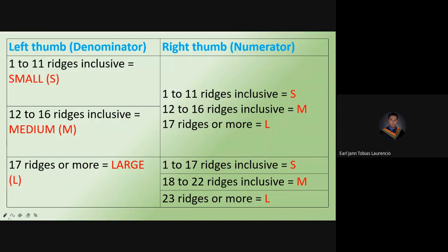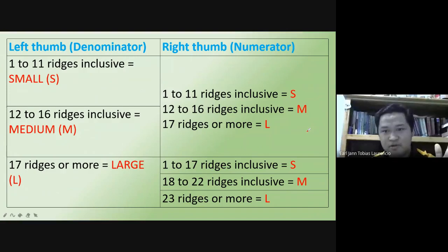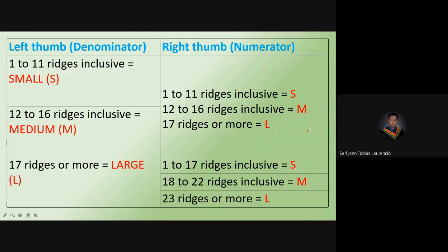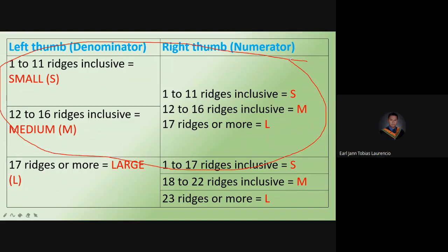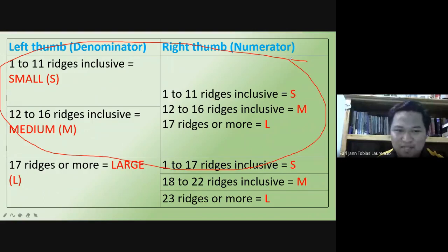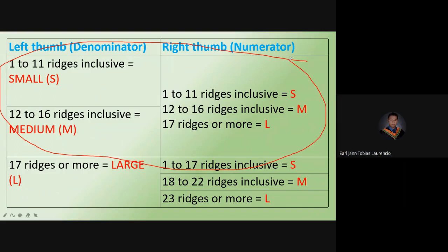When the left thumb is small, use the first category for the right thumb. For example: if the left thumb ridge count is 7, that is small. If the right thumb is 15, that is medium using the first rule. Another example: if the left thumb is 14, that is medium. If the right thumb ridge count is 7, that is small. If the right thumb is 21, that is large.